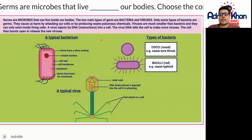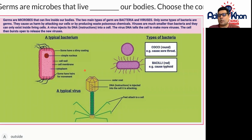This gives you an example of what a bacterium looks like. Some have a slimy coating, a simple nucleus, cell wall, cell membrane, and cytoplasm. Some also have hairs so they can move inside the body.